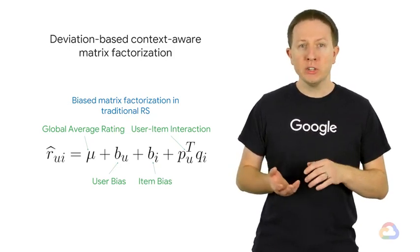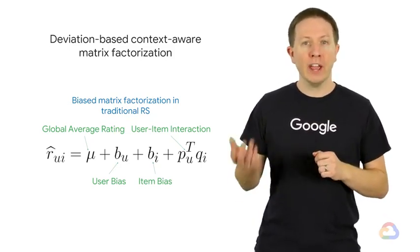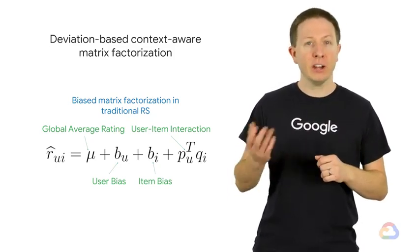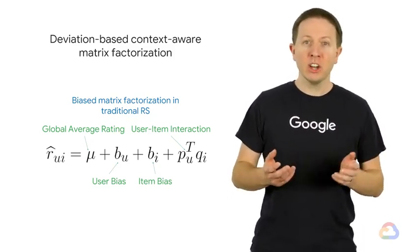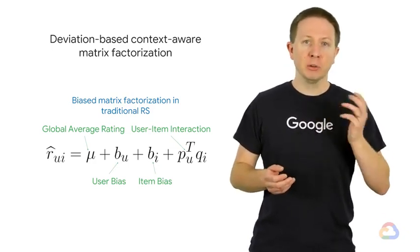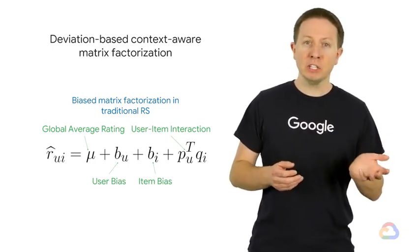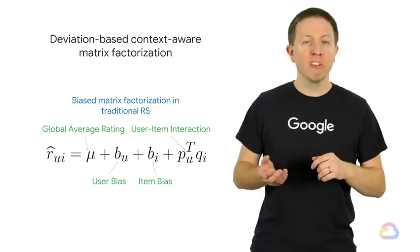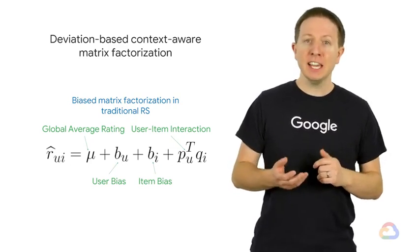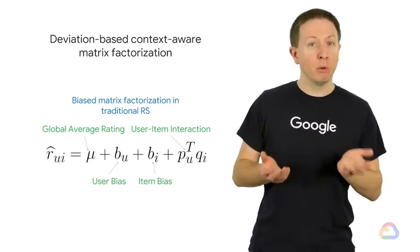Or we can use bias matrix factorization, where we add a term for the global average rating μ, a bias term for user U (bu), and a bias term for item I (bi). Of course, we have our user-item interaction term, which is the dot product of the user's vector P from the user factor embedding matrix U, and the item's factor vector Q from the item factor embedding matrix V. As we can see, context is completely missing from our rating predictions.